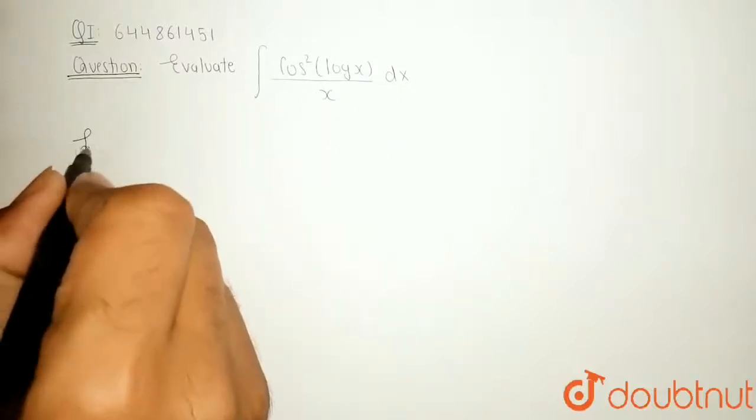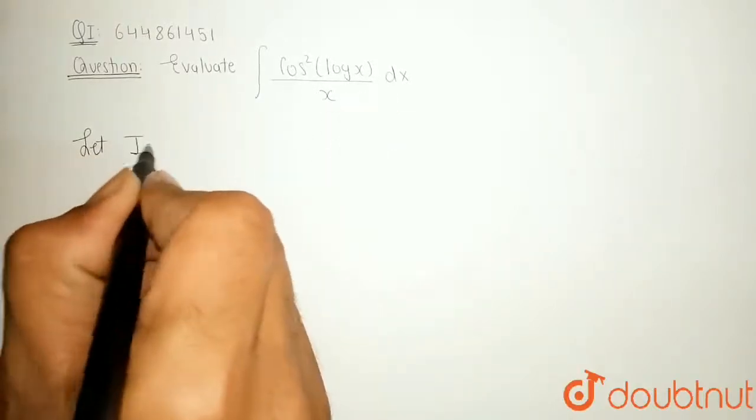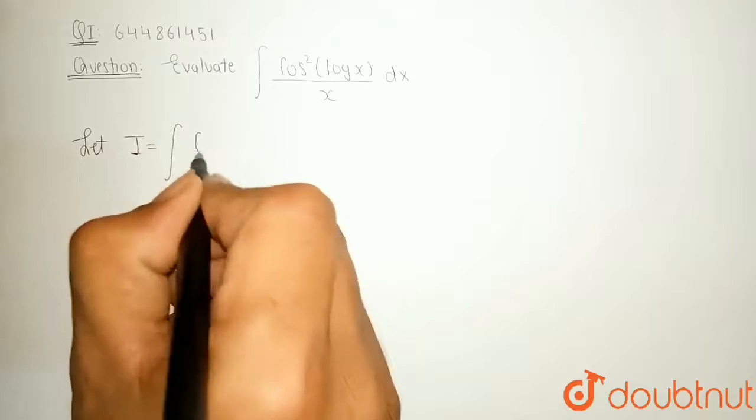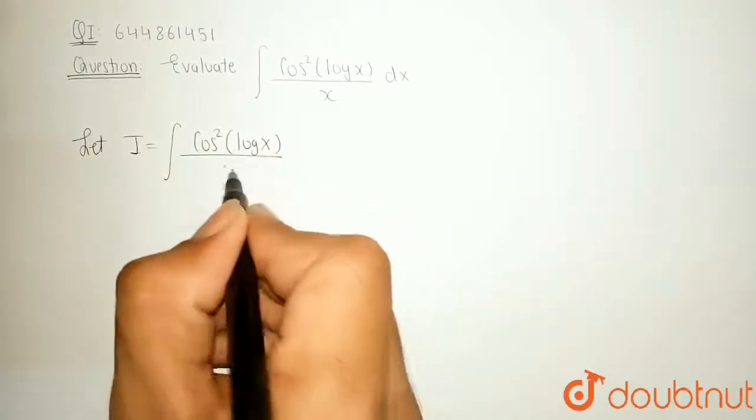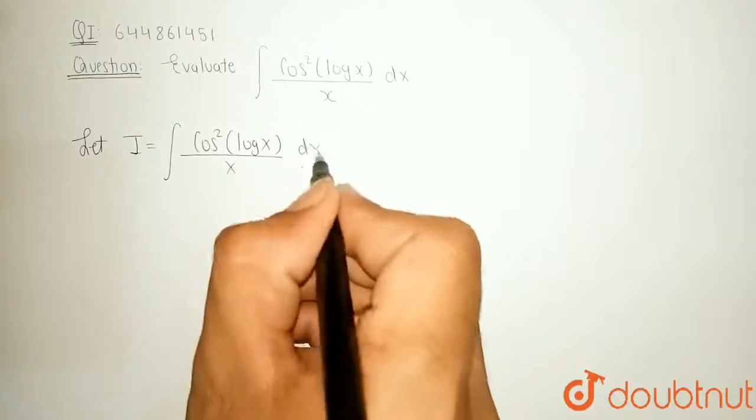Let us consider the value of integral is I. So, I can write I is equal to integration of cos square of log of x upon x dx.